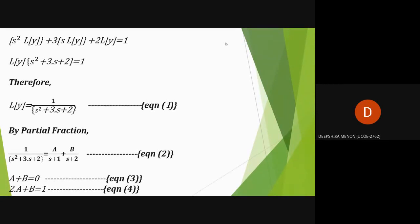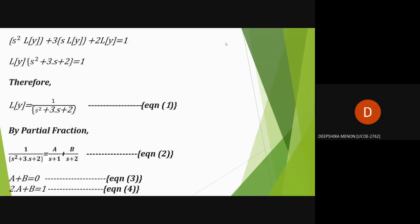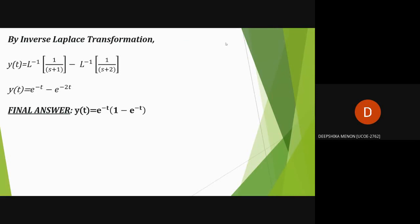Solving equations 3 and 4 simultaneously, we get A equals 1 and B equals minus 1. Substituting these values in equation 2, we get 1 over (s² plus 3s plus 2) equals 1 over (s plus 1) minus 1 over (s plus 2). From equation 1, L{y} equals 1 over (s plus 1) minus 1 over (s plus 2). Taking the inverse Laplace transform, we get the final answer: y(t) equals e raised to minus t, minus e raised to minus 2t.